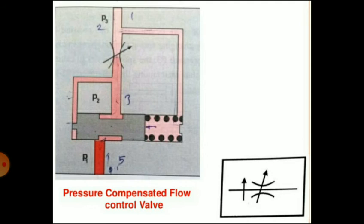Regarding construction, it consists of a basic variable orifice with an additional variable restrictor of spool type connected in series with the actual metering throttle valve. This variable restrictor changes automatically as soon as a variation in pressure drop occurs at the metering throttle. P1 is the pressure from the pump, P2 is the reduced pressure after passage through the spool, and P3 is the reduced pressure after passage through the orifice.